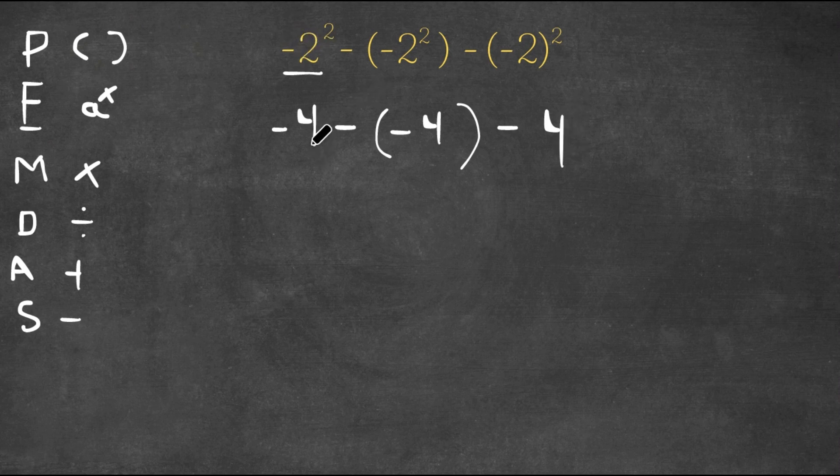And as you can see in this one, this is -4. However, in this one, (-2)², this is simply just positive 4.